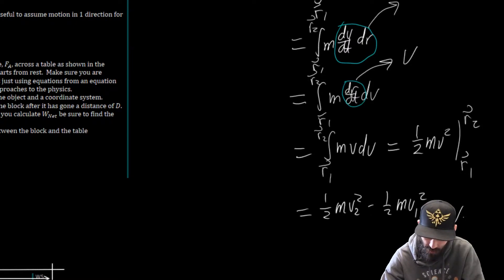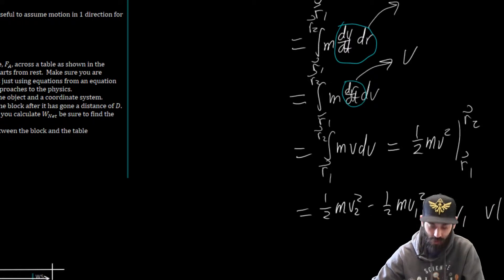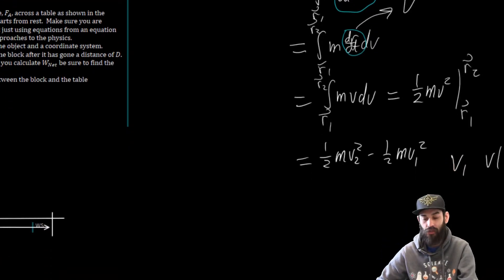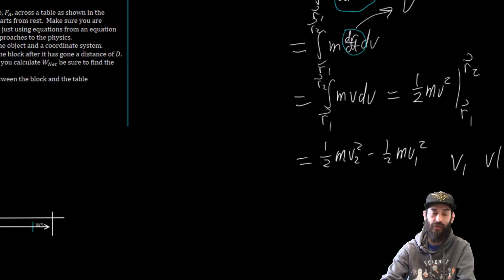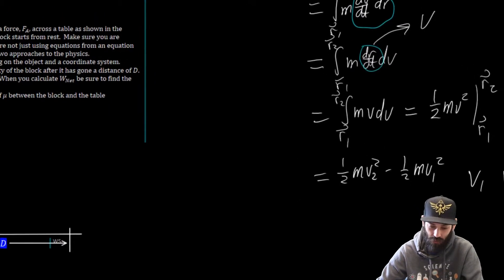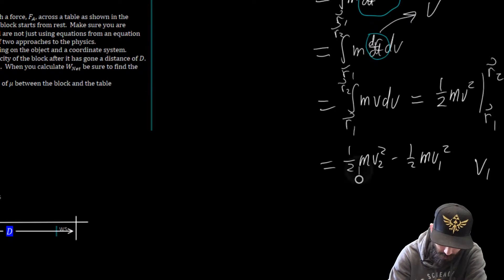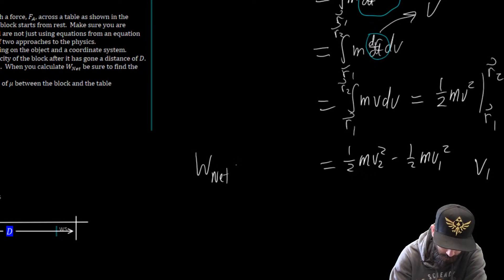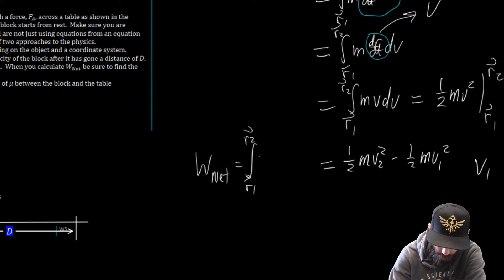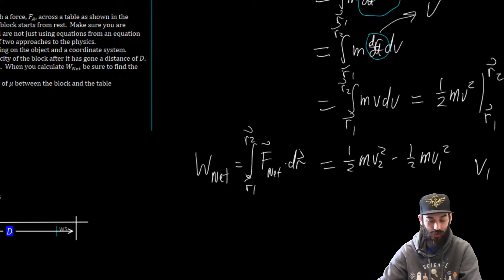We have to be careful because I'm not plugging in R vector 1 and R vector 2 into the velocity. What I'm doing is evaluating the velocity at this position and at this position. So this is going to be equal to 1/2 Mv₂² minus 1/2 Mv₁², where v₁ is the velocity function evaluated at position R1, and so the net work is equal to the integral from R vector 1 to R vector 2 of F_net dot dr.